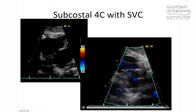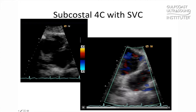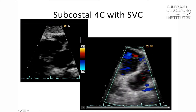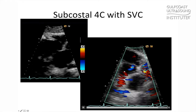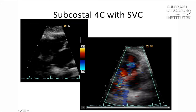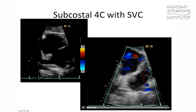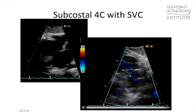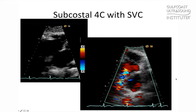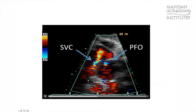On the lower right panel, you now see the nice red laminar flow of the SVC coming up. And over to the right, in the area of the fossa ovalis, you will see the small PFO. The next image shows a still frame of the SVC flow coming up and the PFO flow seen right here. So now you can differentiate between the normal SVC flow and a PFO.